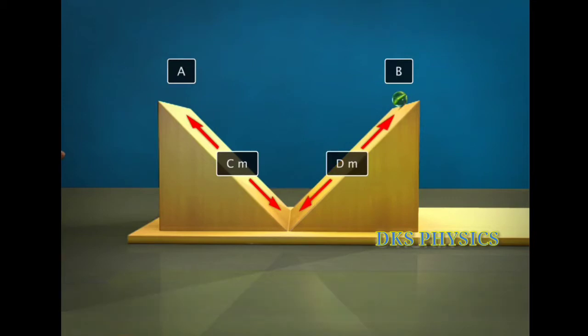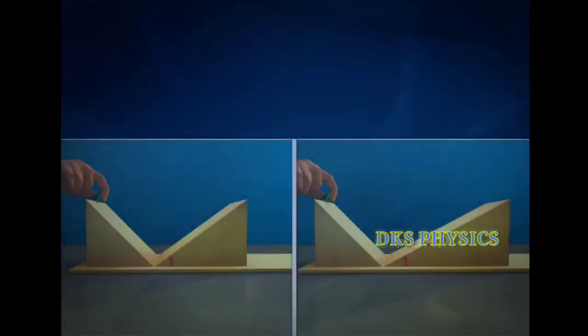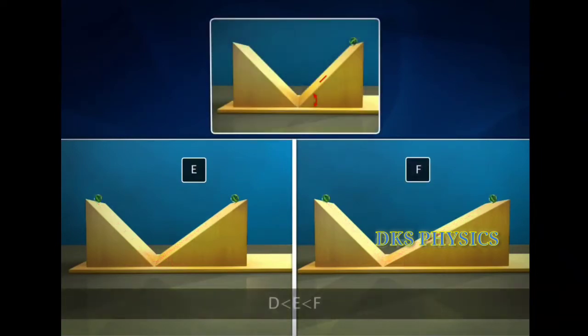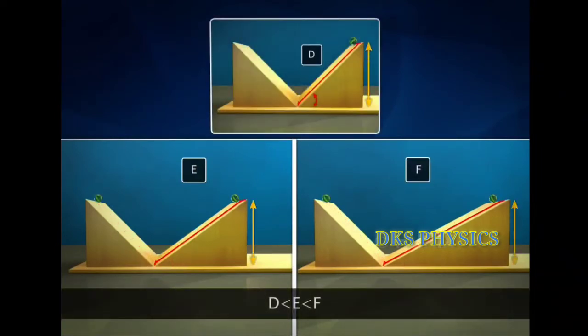Let's see what happens if the angle of inclination of the right-hand side of the plane is gradually decreased. The marble travels a longer distance till it reaches its original height.